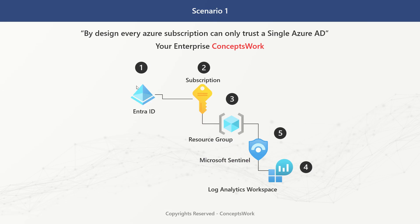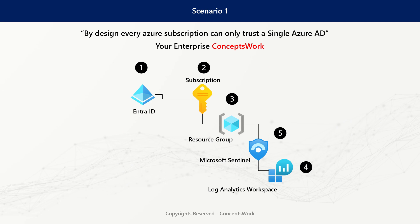There are multiple scenarios in which you can set up Microsoft Sentinel. In the simplest scenario — one single subscription and one single Microsoft Entra ID — the process is exceptionally simple. Just create a new resource group, create a Log Analytics Workspace within that resource group, and set up Microsoft Sentinel in that workspace.